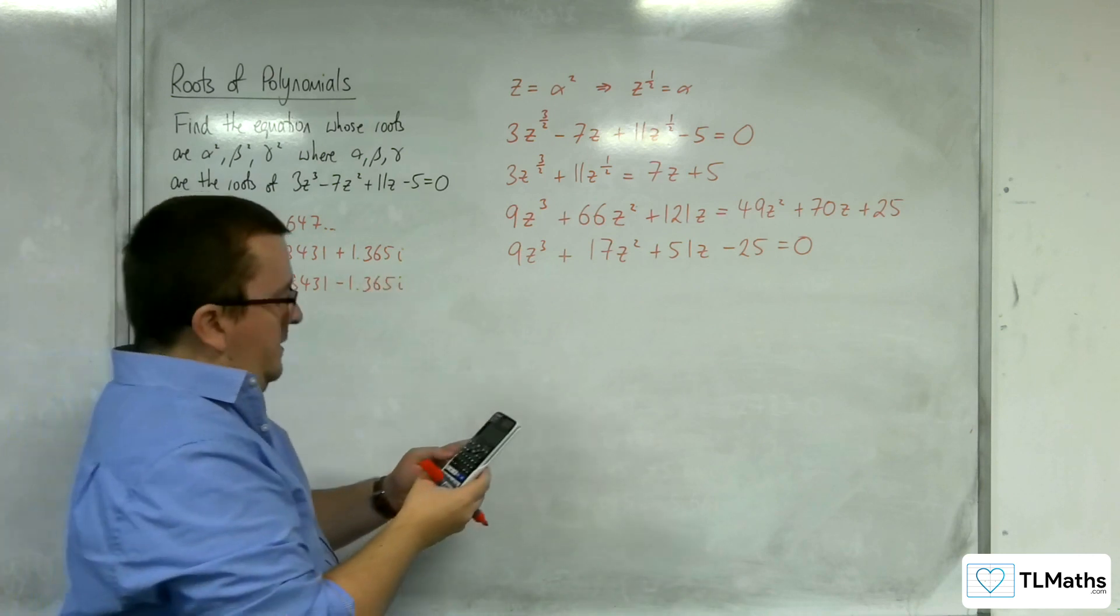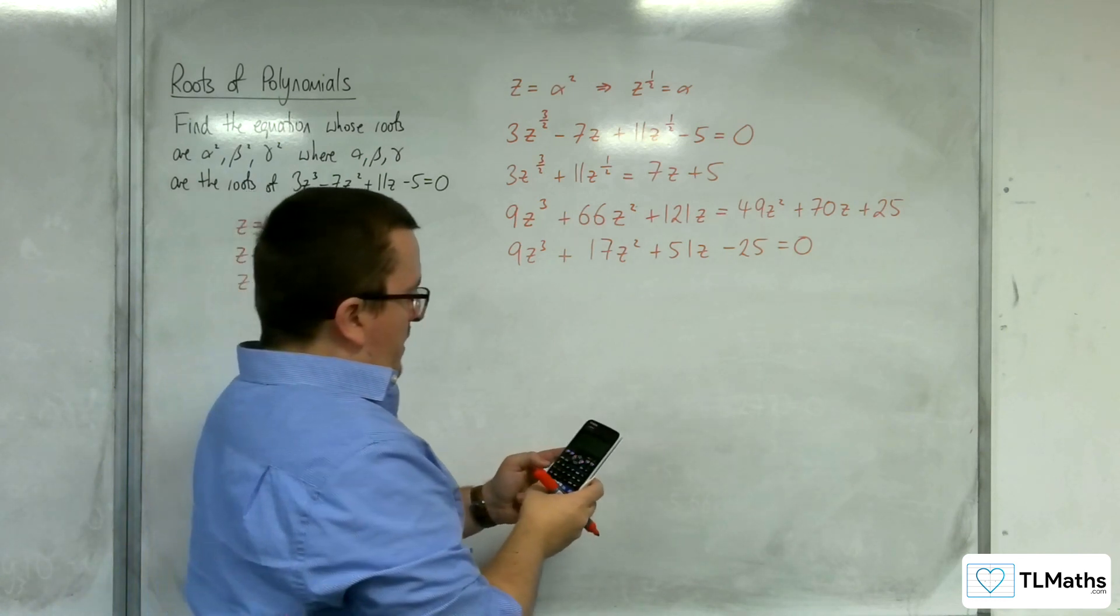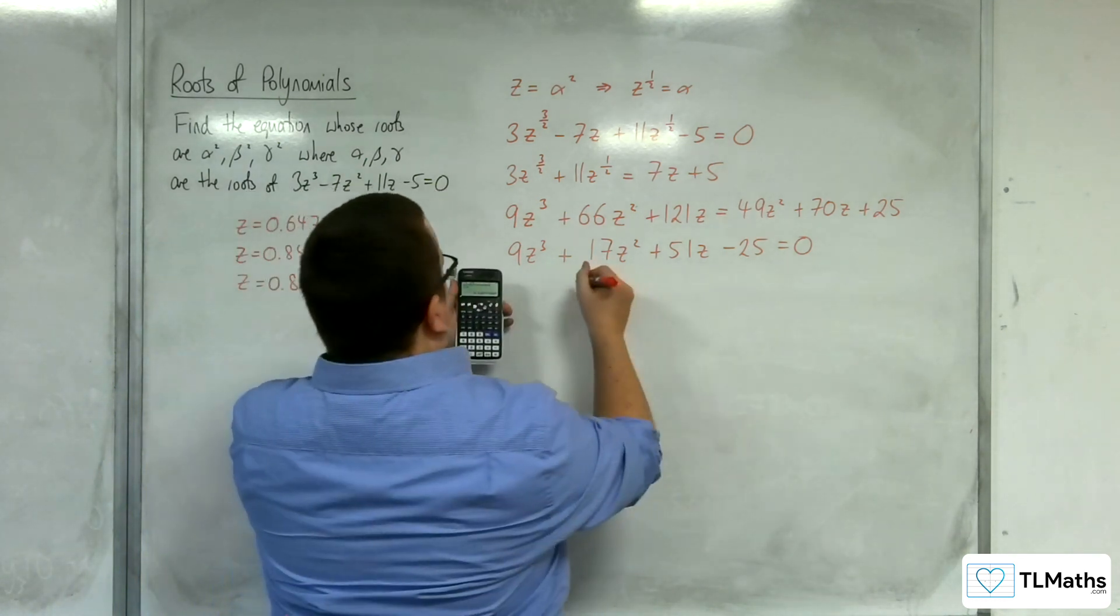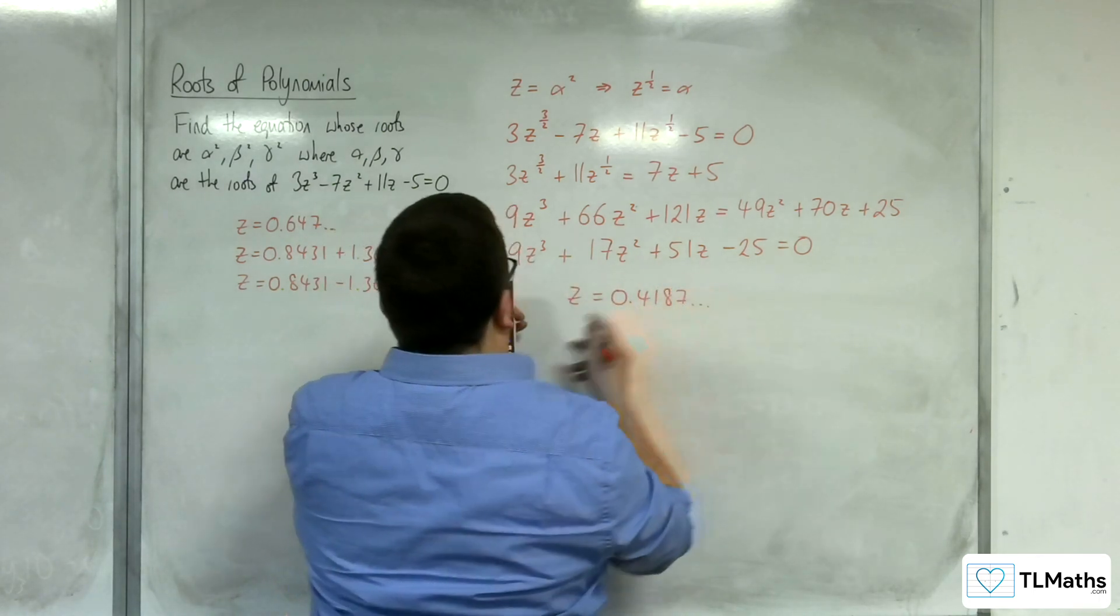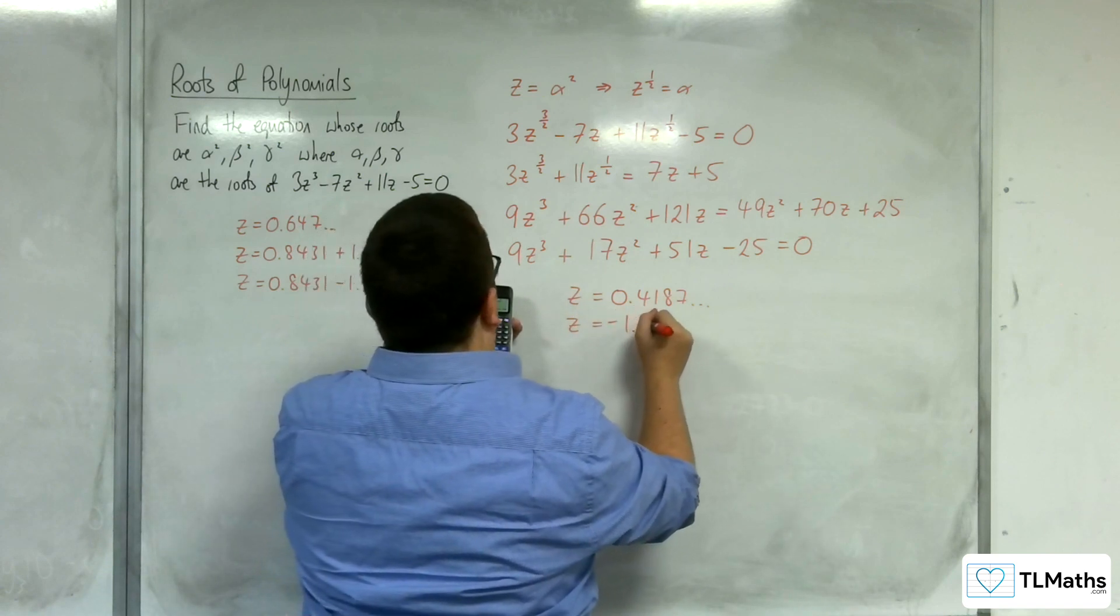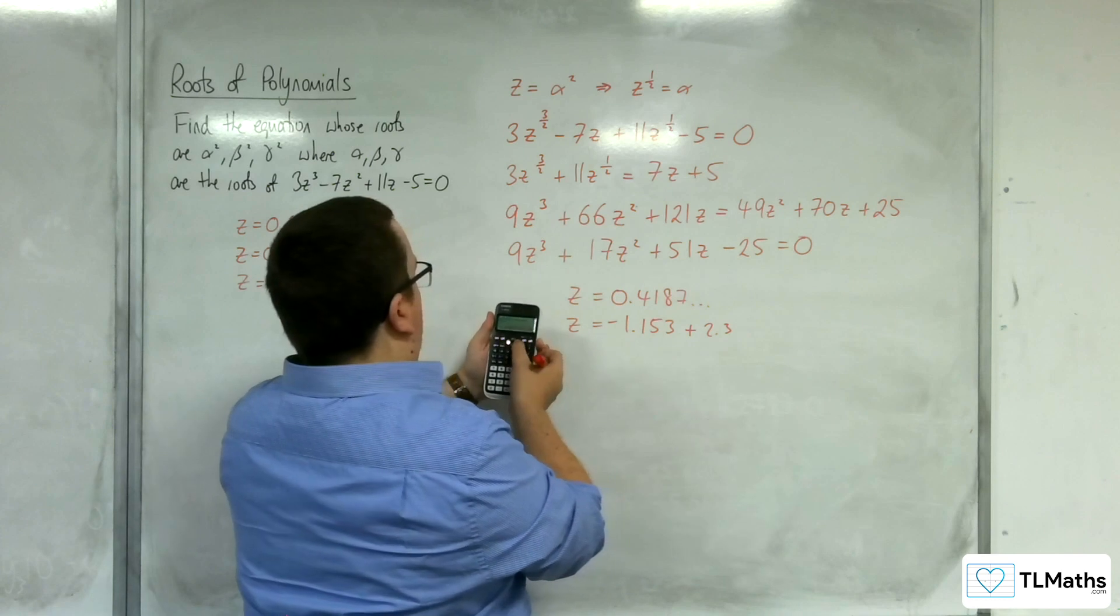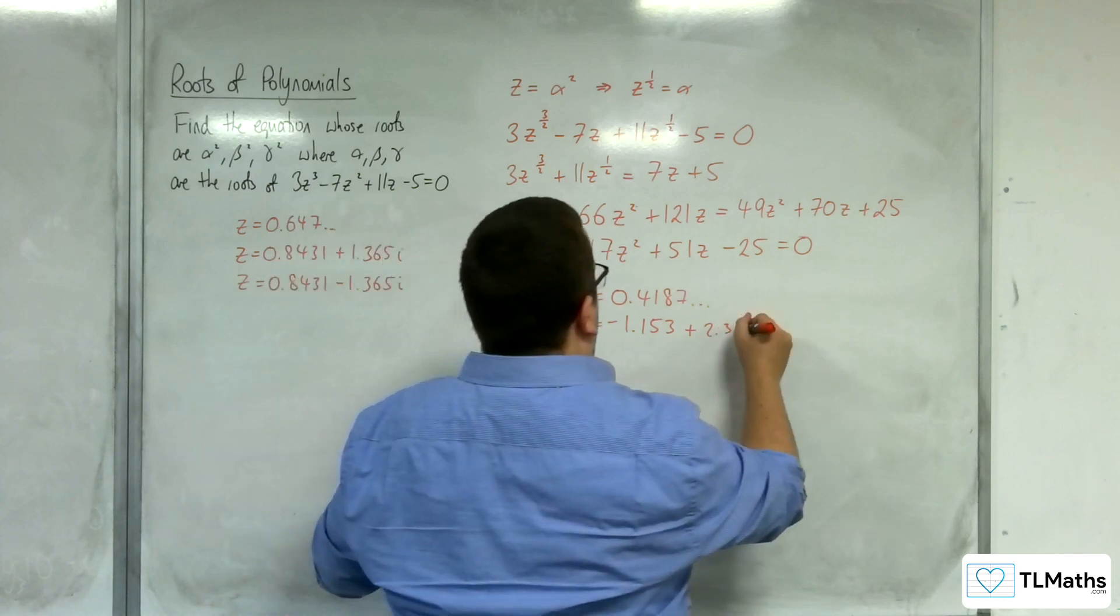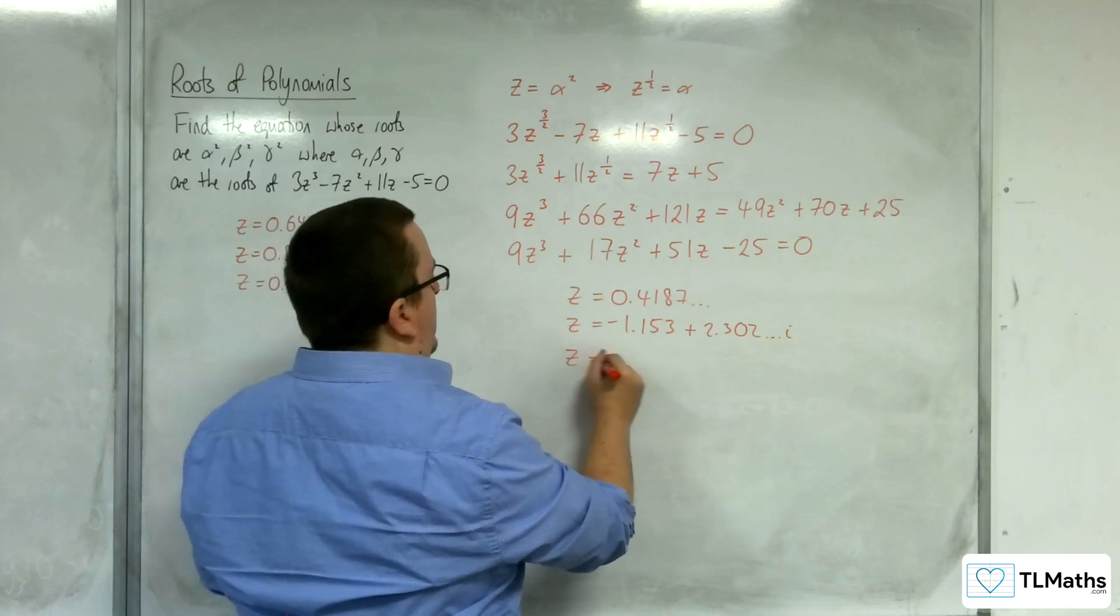Let's pop this one in, 9, 17, 51, and minus 25. So we get z equals 0.4187, z equals minus 1.153 plus 2.302i, and we'll get the conjugate.